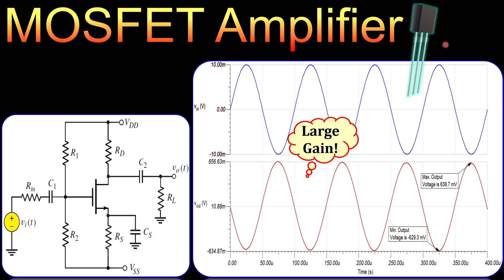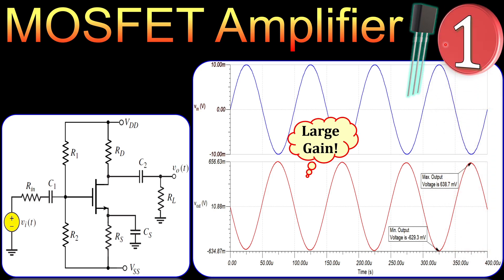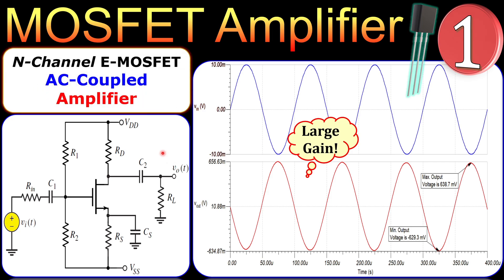Hi everyone and welcome to a new video about MOSFET circuits. This is our example about a MOSFET amplifier — it will be our first example. We will look at the common source amplifier where the MOSFET is an n-channel enhancement type. We will work out the voltage gain, the DC analysis, and the AC analysis for this AC coupled amplifier circuit.